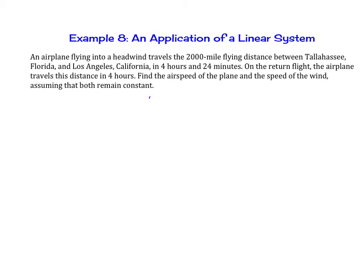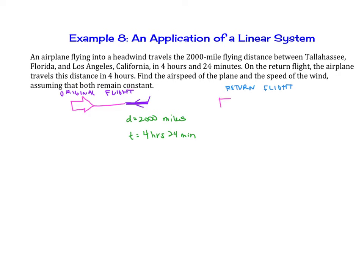Let's draw a diagram so you can see what's happening here. We have the original flight — the distance is 2,000 miles and the time is 4 hours and 24 minutes. It's flying into a headwind, so the wind is slowing down the plane. On the return flight, the wind is still traveling the same direction and speed, so it's going to make the plane go a little faster. The distance is still 2,000 miles, but the return flight is only 4 hours.